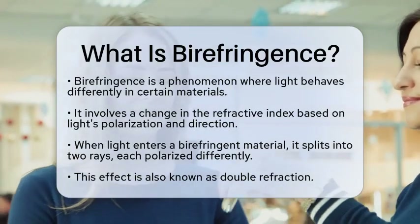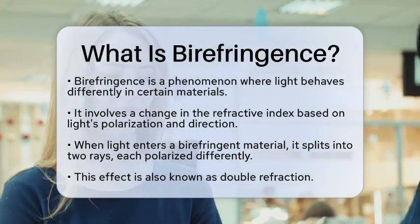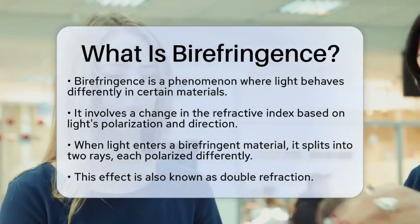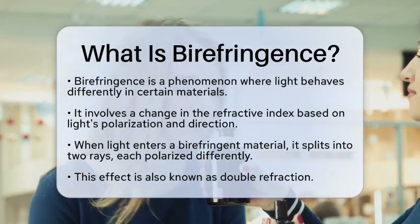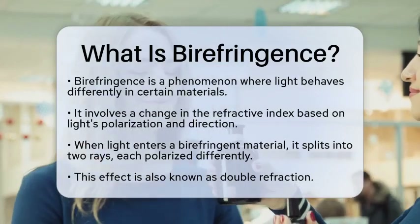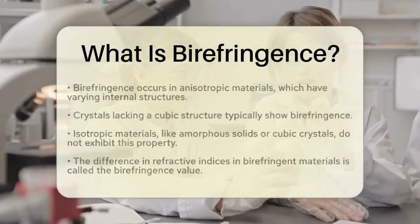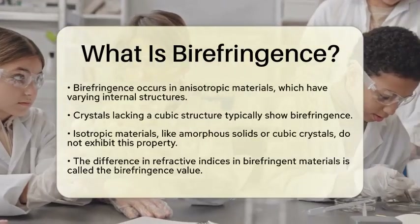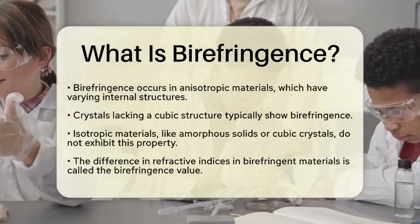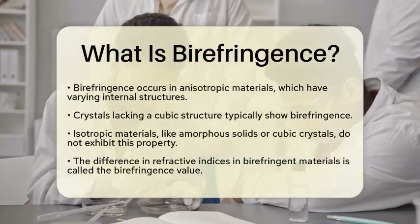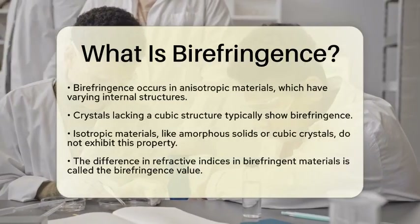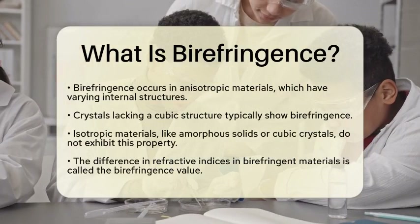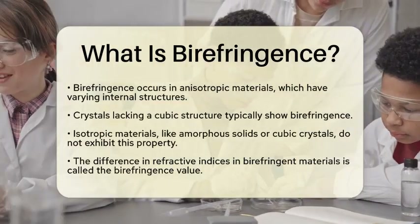At the atomic or molecular level, birefringence occurs because the material is anisotropic. This means its internal structure causes light to interact differently along various axes. For instance, crystals that do not have a cubic structure often display birefringence. On the other hand, isotropic materials, such as amorphous solids or cubic crystals, exhibit the same refractive index in all directions and do not show birefringence.